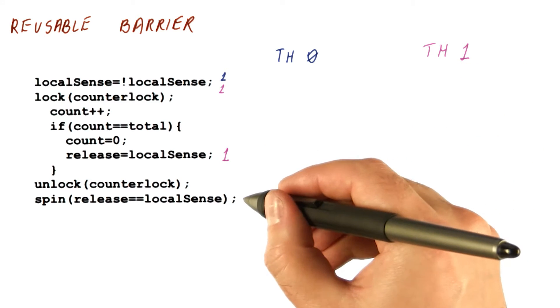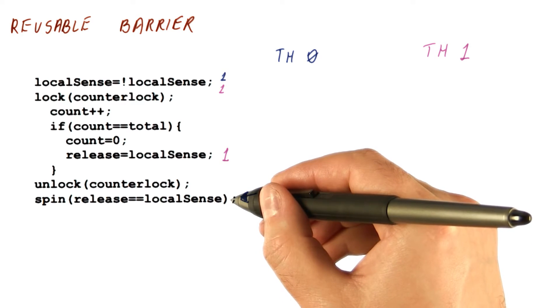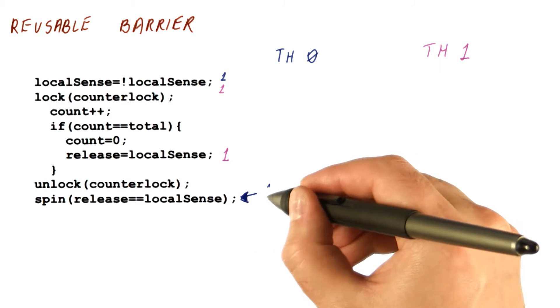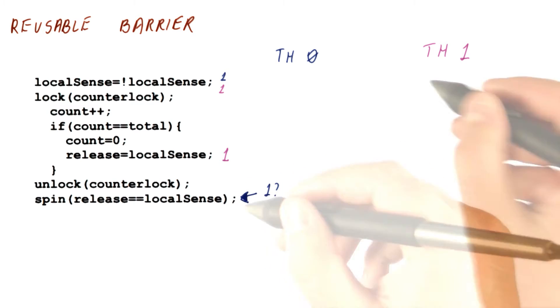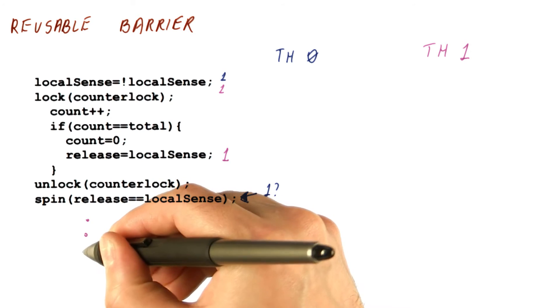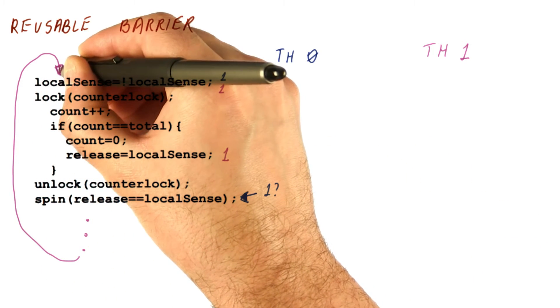So now let's say that thread zero is stuck here. That was the problem with the previous implementation of the barrier. Let's say that we just don't read it fast enough. So we want to see a one, but we don't check it fast enough. Thread one now proceeds to exit, finishes the work, and comes back to the second instance of the barrier.